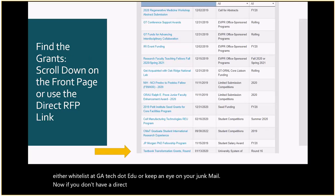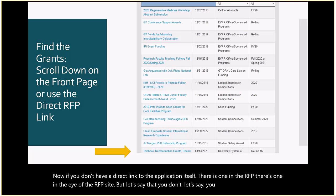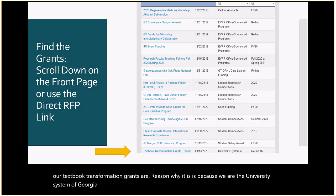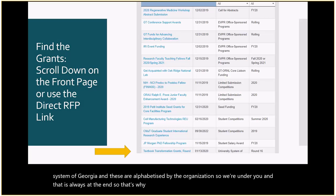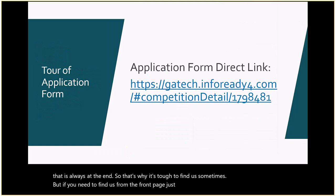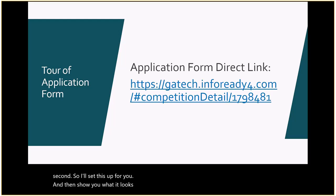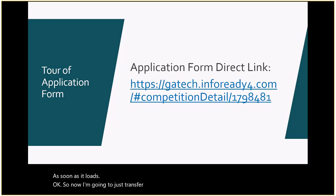If you don't have a direct link to the application, there is one in the RFP. If you go to InfoReady Review directly, scroll down on the front page all the way to the last entries, because our textbook transformation grants are listed under the University System of Georgia, which is alphabetized under U and always at the end. Now let me show you what the application form looks like by pulling up the live document.